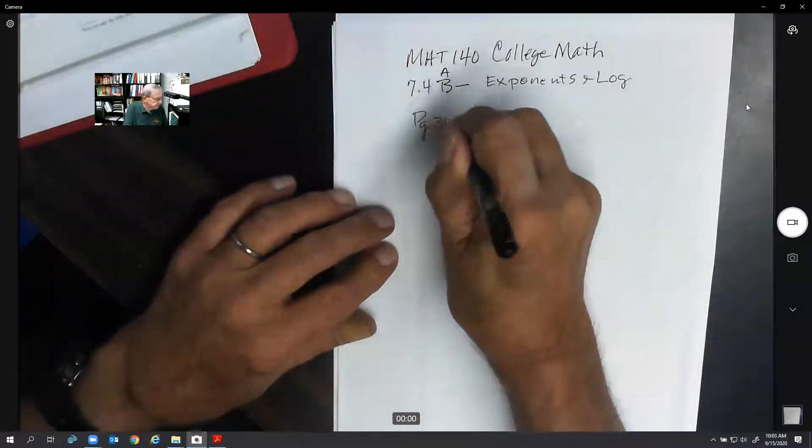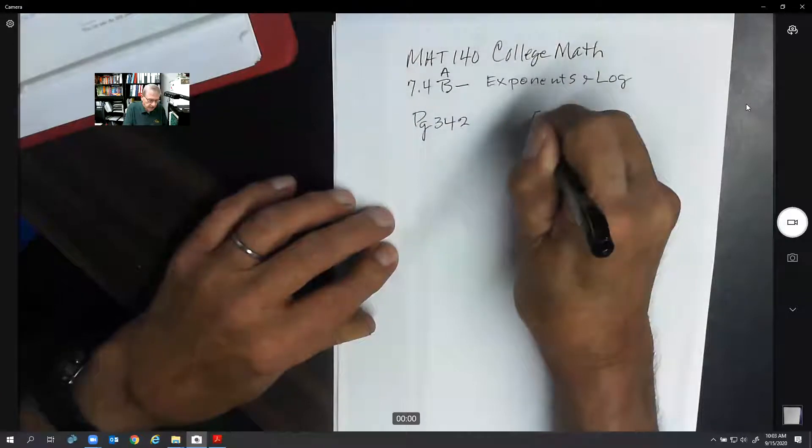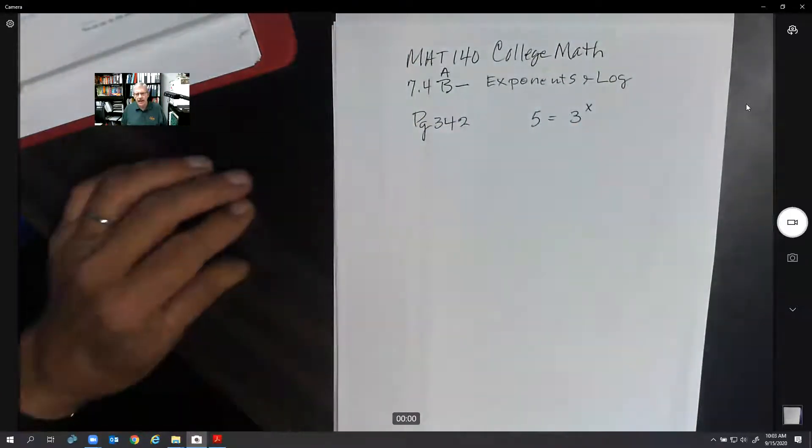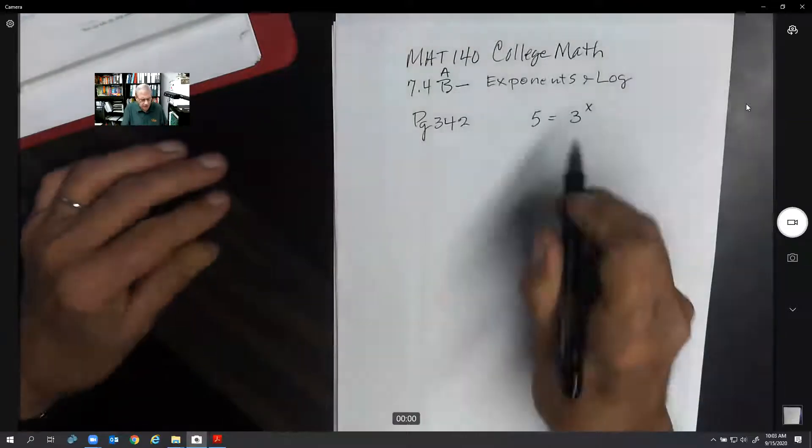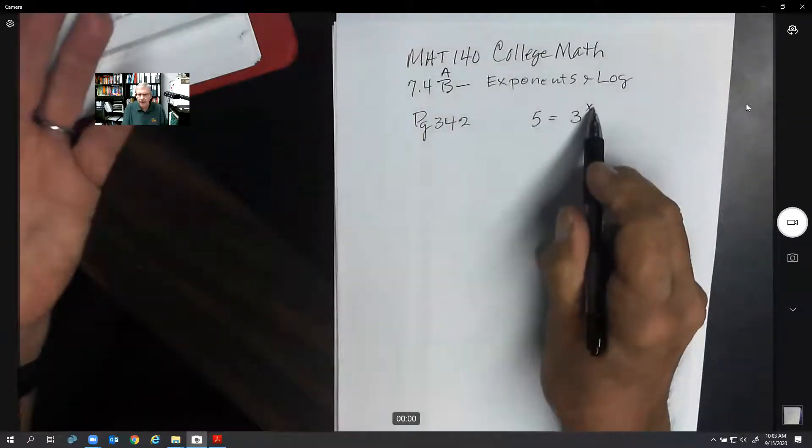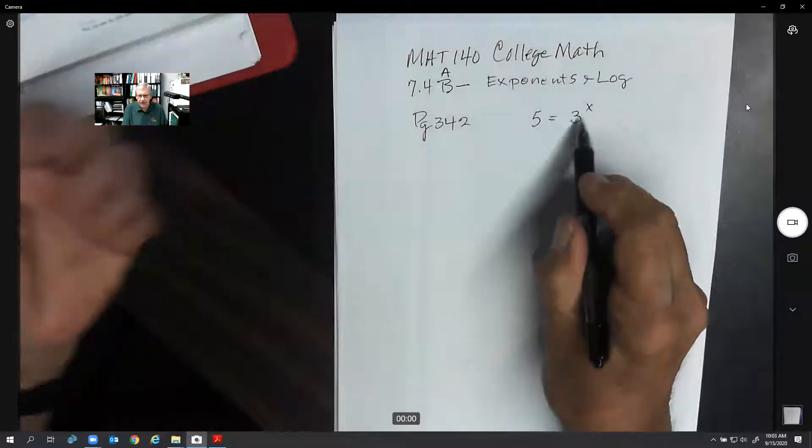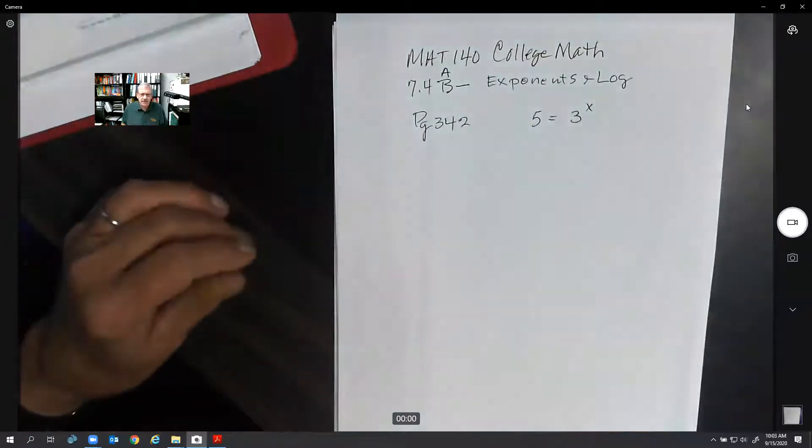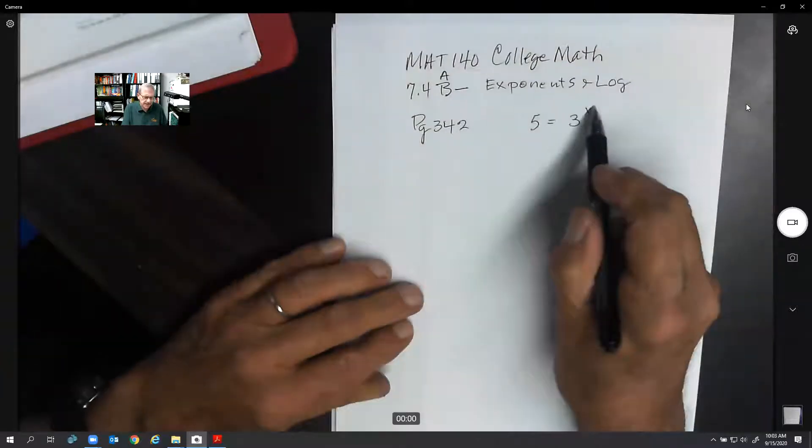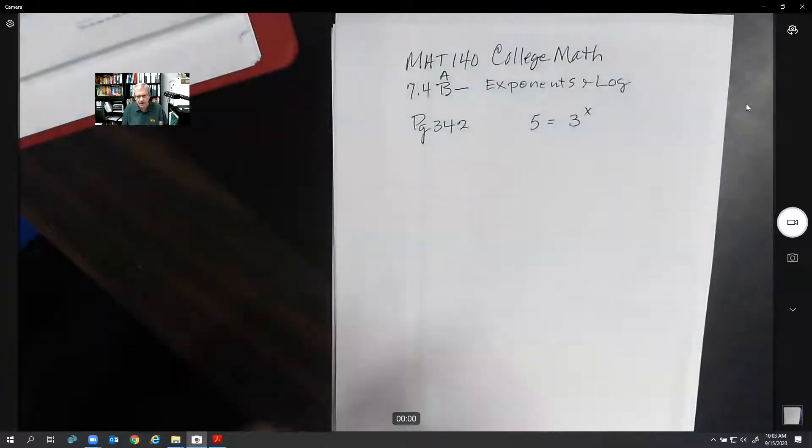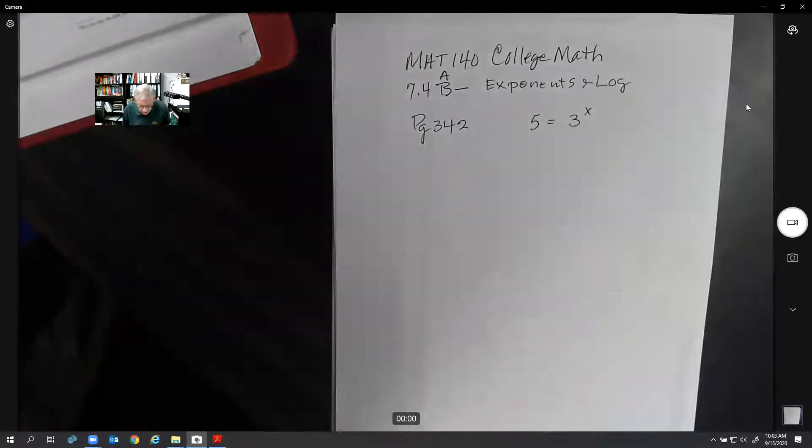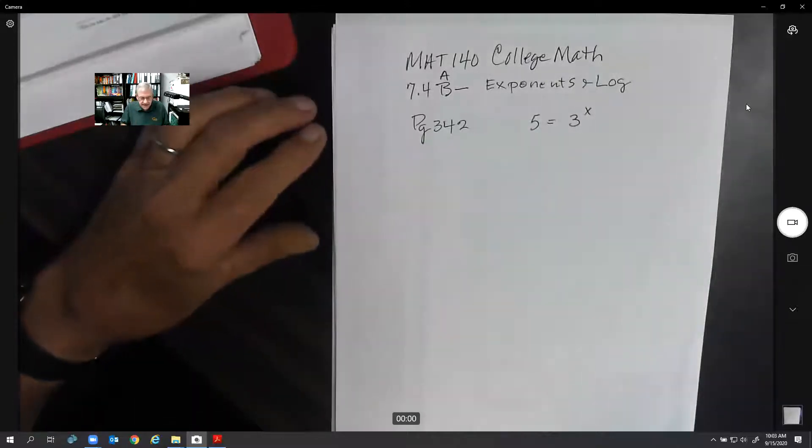There's a problem here: 5 equals 3^x. Here we want to solve for an exponent. We know that 3 to the 1 power is 3, 3 to the second power is 9, but 3 to what power is 5? Powers don't always have to be just whole numbers. They can be decimals. So we're going to show you an easy way to do this using a function on your calculator called LOG.